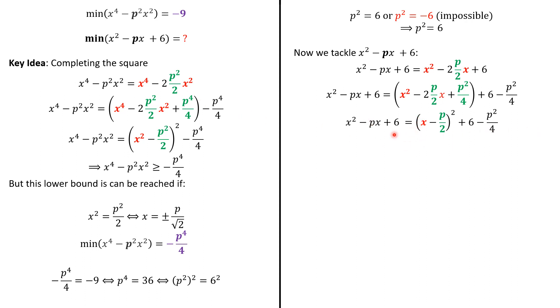So, by the same ideas, we know that this quantity is always positive. So, x² - px + 6 is always greater than 6 - p²/4. And, this quantity is reached for x equals p/2.